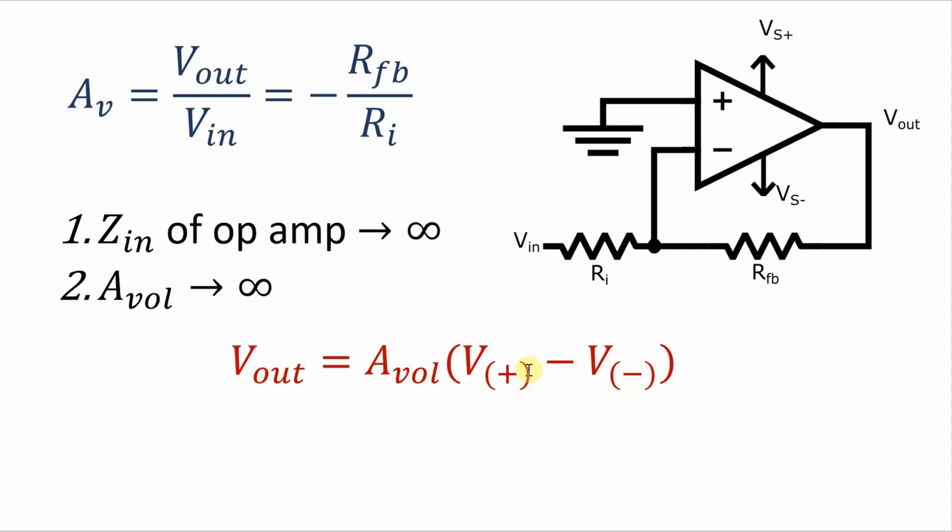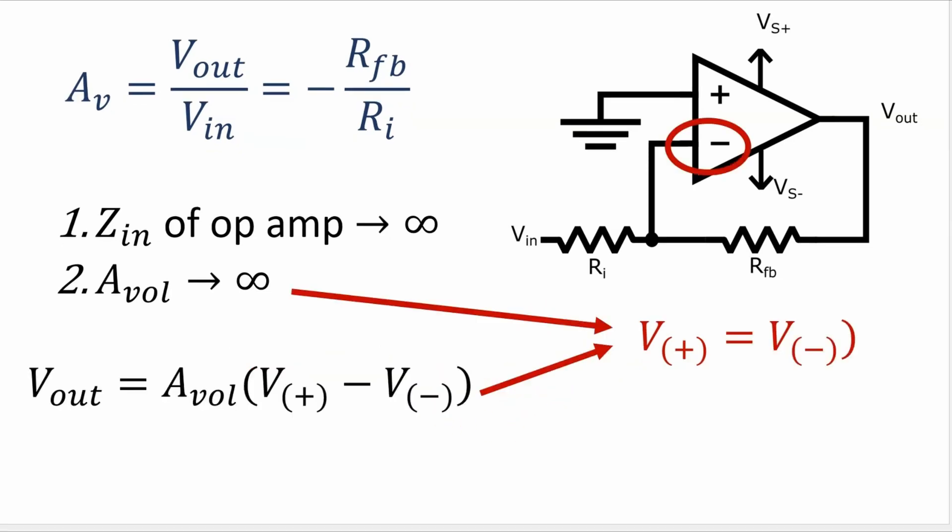That means that the difference between the voltage at the inverting and non-inverting terminal must be effectively zero. In other words the negative feedback of this circuit will force the voltage at the inverting terminal to be equal to the voltage at the non-inverting terminal.